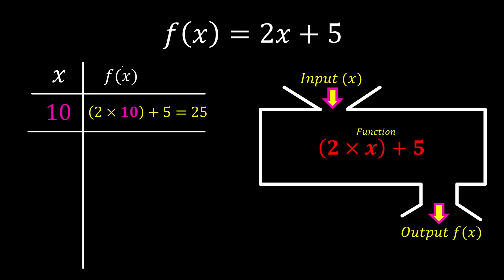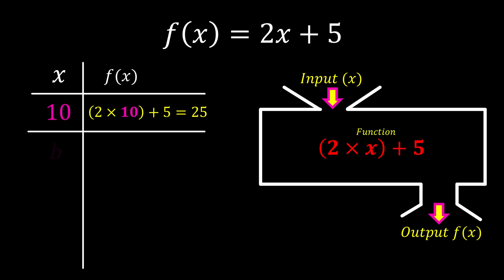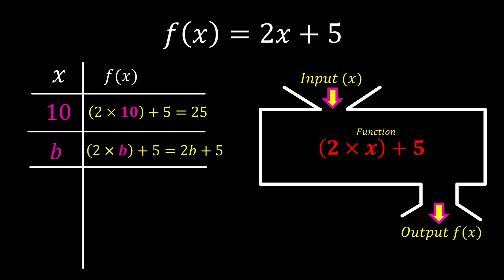So this is how we write it down — f is the function, when you take in x, the result is 25. Some people ask: is it possible to put an unknown as the input? Yes, you can put anything inside. So if I put b, your choice is now b, and 2 times b plus 5 will be our final output.